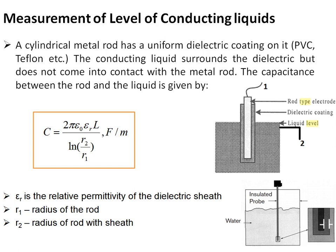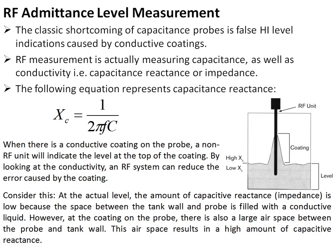The capacitance is given by C = 2π·ε₀·εᵣ·L / ln(r₂/r₁), where r₁ is the radius of the rod and r₂ is the radius of the rod including its sheath. The problem with capacitance type level measurement for conducting liquids is that the conducting liquid can coat the insulation, giving an erroneous signal.